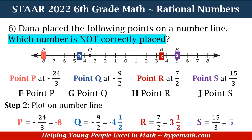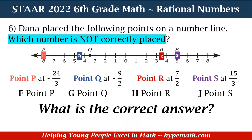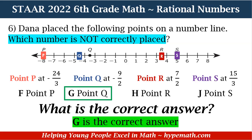One thing I will say, 6th graders: whenever you're solving problems, it's better to solve the problem for yourself first. Work it out — pull out your scratch paper — and then once you get the answer, compare it to the answer choices. That increases your chance of getting the problem correct. We've plotted our points. Can you see what the correct answer is? The answer is G. Point Q is not correctly placed. G is the correct answer.